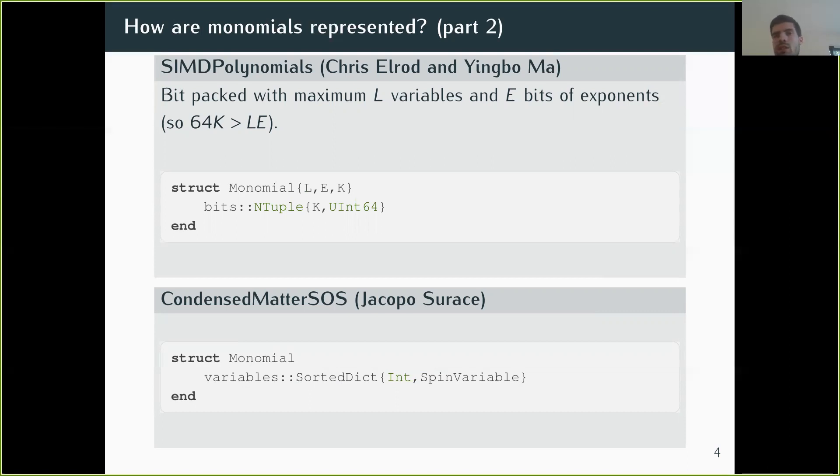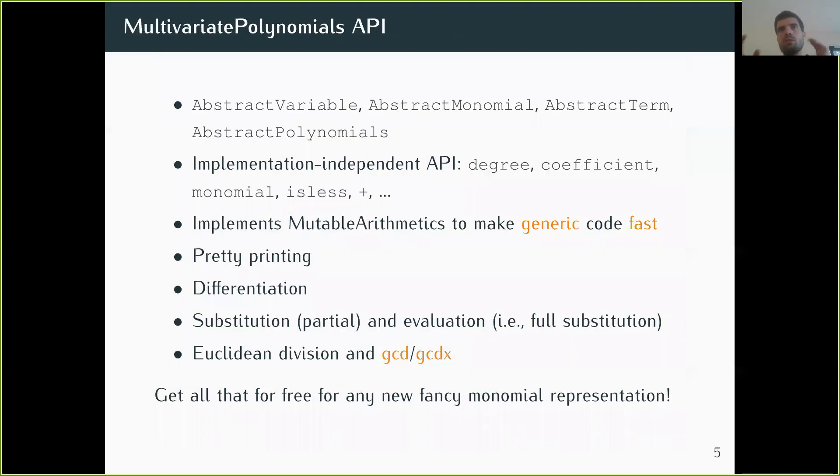As you can see, there is an incentive to create more and more monomial representations. And it would be a pity if for every monomial representation, you had to carry out very similar work of doing the rest of the implementation to have a fully working multivariate polynomials package.